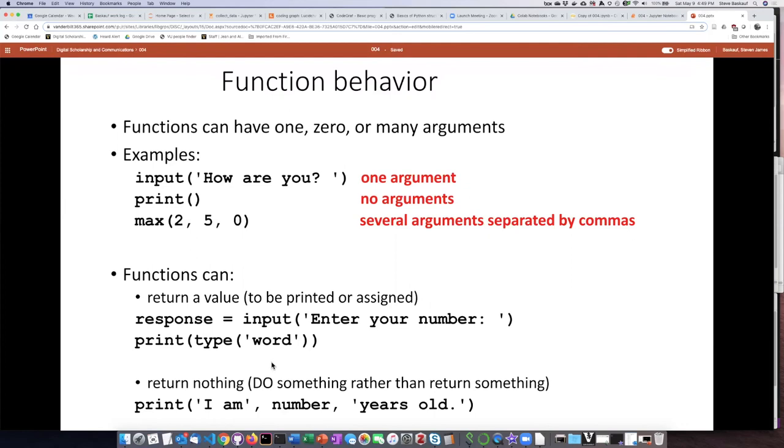The other thing that can happen is that a function may return nothing. The example of that we saw is the print function. The print function actually does something, but it does not return a value.